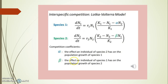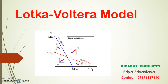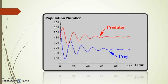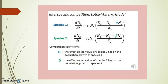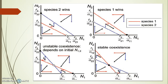Now let me again discuss the inter-specific competition equation dN1/dt. This graph is very important — here I am going to discuss the four outcomes of competition. In the first case, species 1 is eliminated or species 2 wins. Looking at this graph, you can see species 2 is winning the overall competition, or species 1 is eliminated.